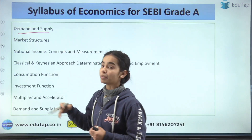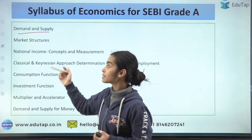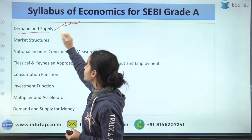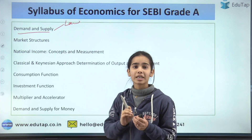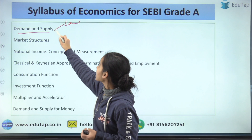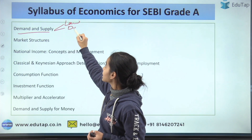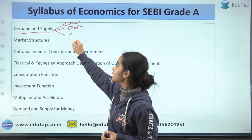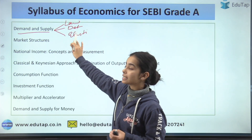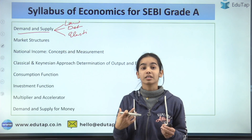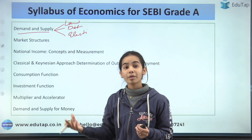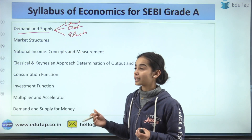In demand and supply, study the meaning, the law of demand and supply — which you can understand in one line — then the determinants of demand and supply, and the elasticity of demand and supply: price elasticity, cross elasticity, and income elasticity.